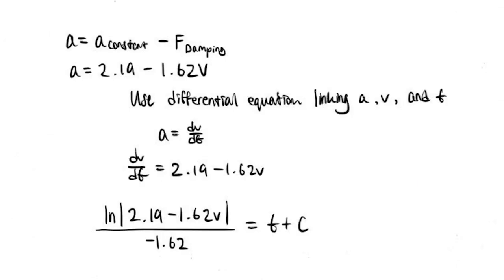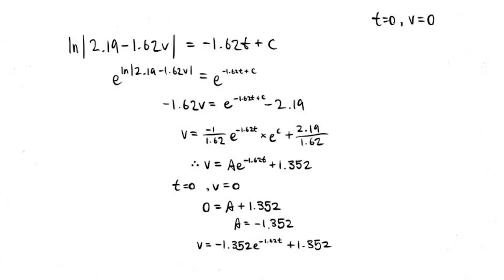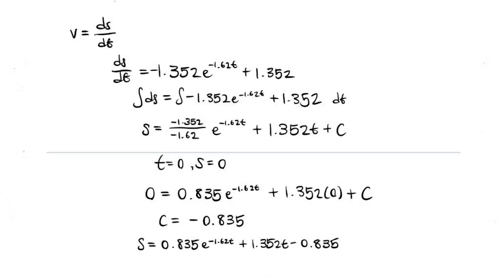Total acceleration is given by the constant acceleration minus the damping force. To find velocity, we use the differential equation that links acceleration, velocity and time, which is a equals dV over dt. A is then substituted into this equation, rearranged and integrated to find velocity in terms of time. Initial conditions of when time, velocity or displacement is zero are needed to be applied to each of the differential equations, as the equations are integrated without limits and have constants of integration. To find displacement, we use the differential equation that links velocity, displacement and time, which is V equals dS over dt. The velocity equation is then substituted into this equation and integrated.